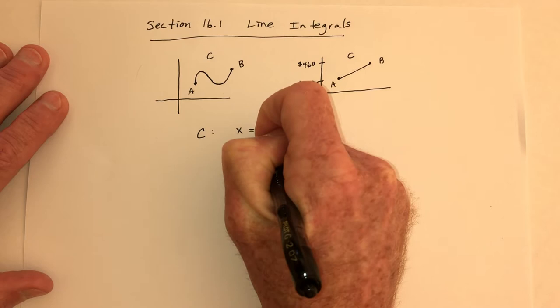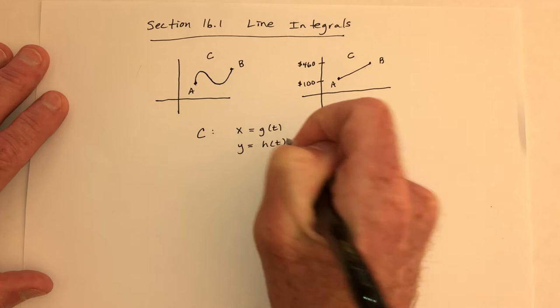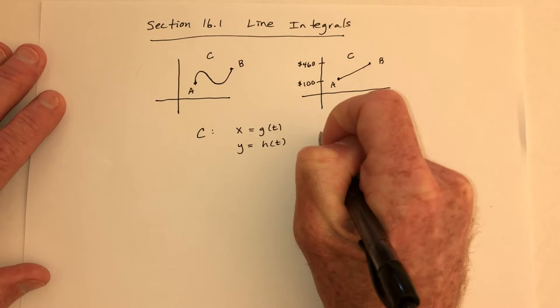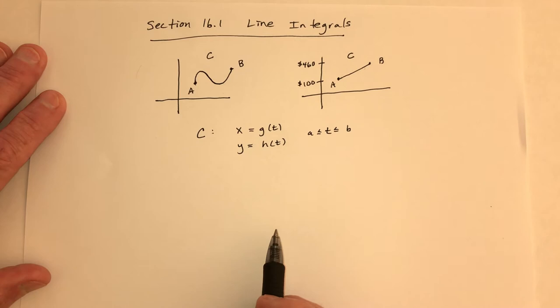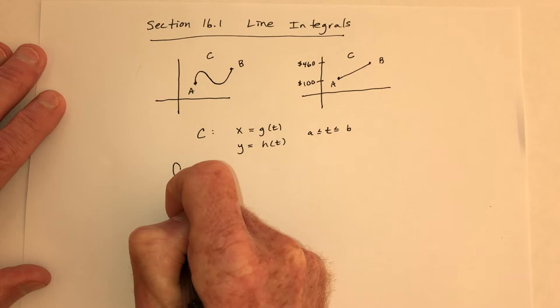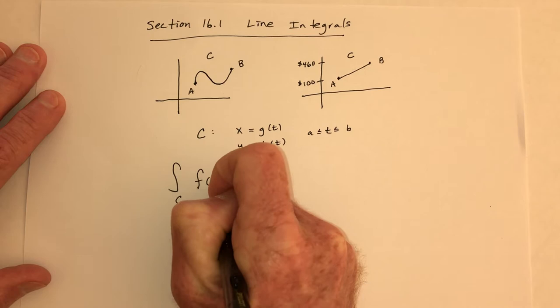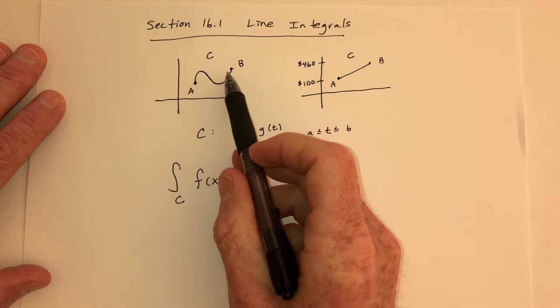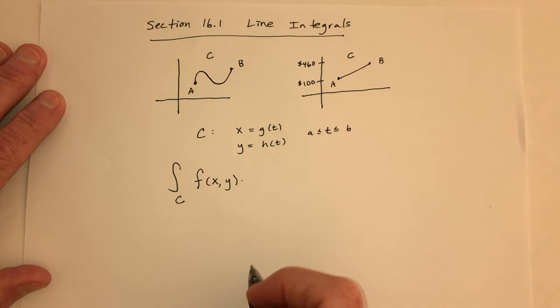Let's say you can create parametric functions that give you curve C, whether it's a curvy line or a straight line. Let's say t goes from a to b, so it takes that amount of time to get from point A to point B. Then the line integral — integrate over C — involves some function telling you how much weight you're carrying, how much work you're doing, or how much money you're making.